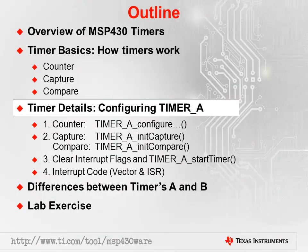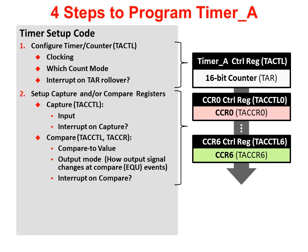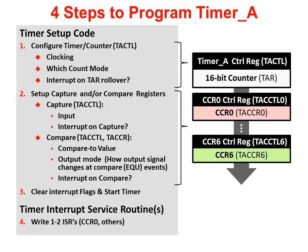Now that we've reviewed the timer counter basics, let's dig into the four steps needed to actually make them go. Step one is configuring Timer A's control register, TA-CTL: what clock do you want to use, which count mode do you want to use, and should we generate an interrupt to the CPU when TAR — the counter — rolls back to zero? Step two: set up each CCR that you'll need for your application, either for capture or compare. Step three: start the timer, which also normally includes clearing timer interrupt flag bits. Finally, step four: if you're generating interrupts with the timer, you'll need one or two interrupt service routines.